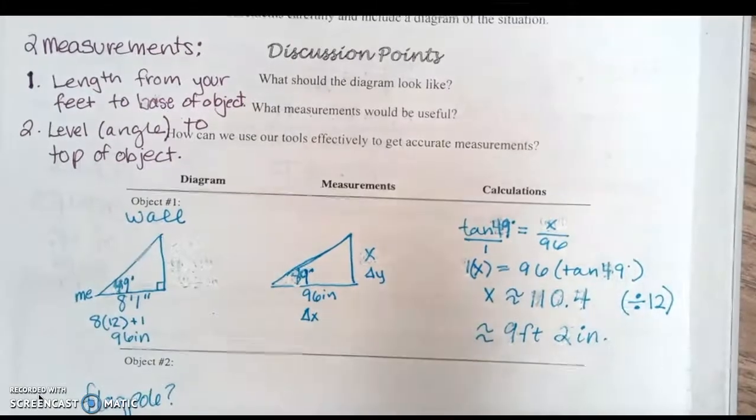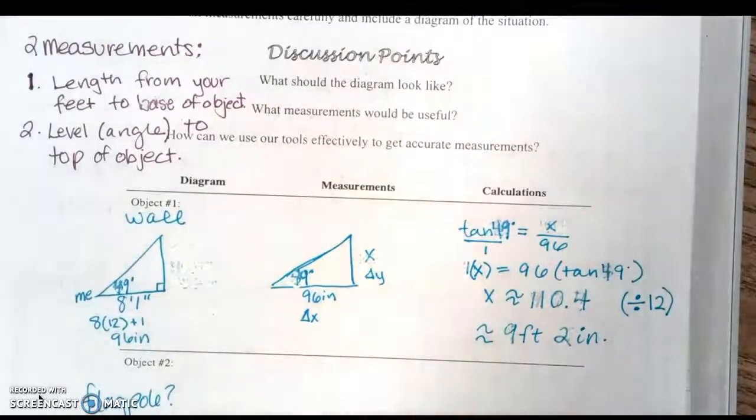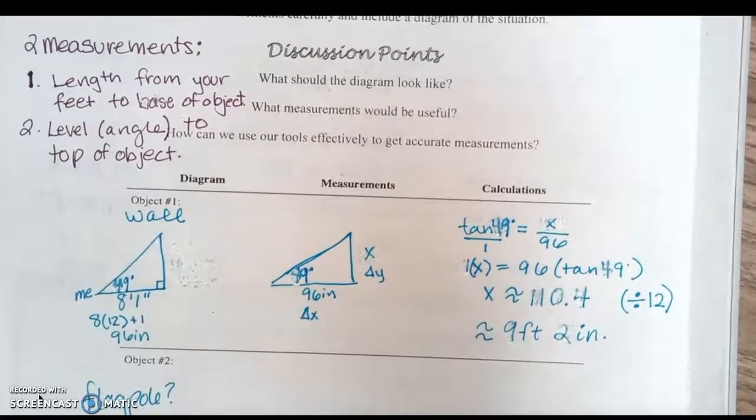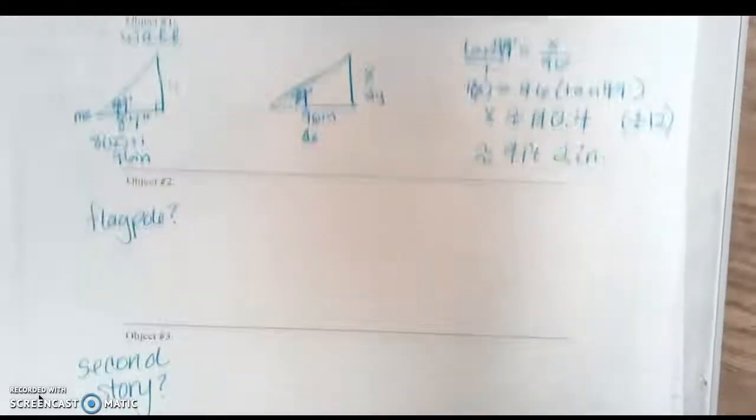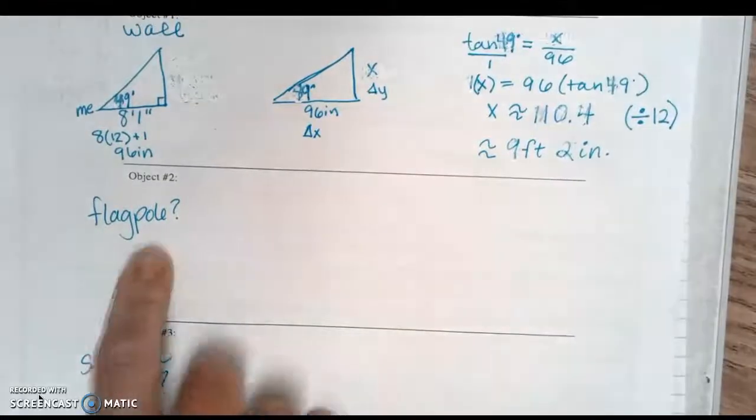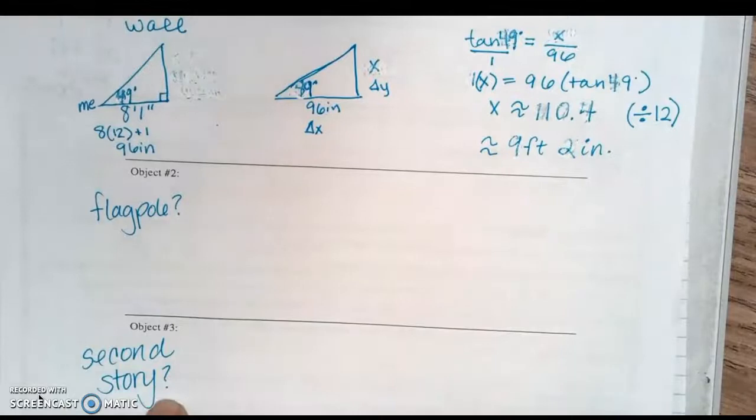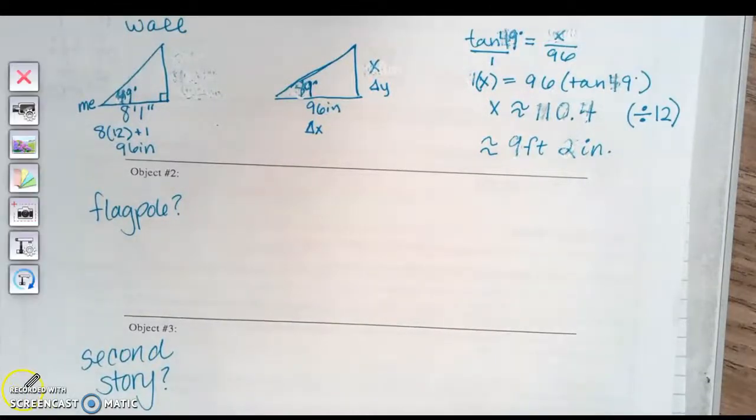We're going to go down to the grassy quad area, and with your group you're going to figure out the height of two more objects. You can pick something like the flagpole, the second story, or maybe a tree. As a team, you need to get two measurements.